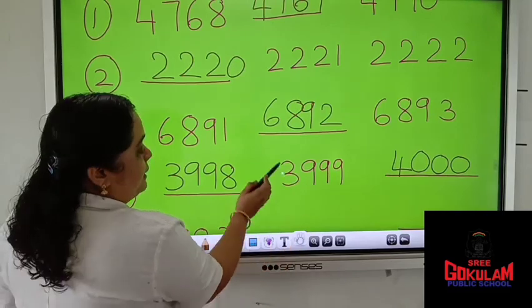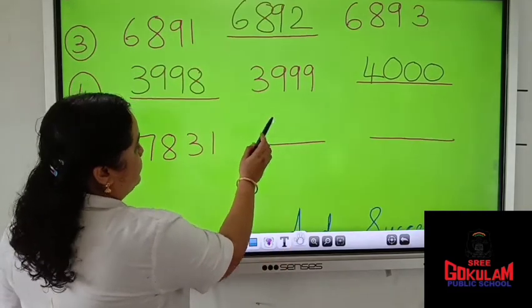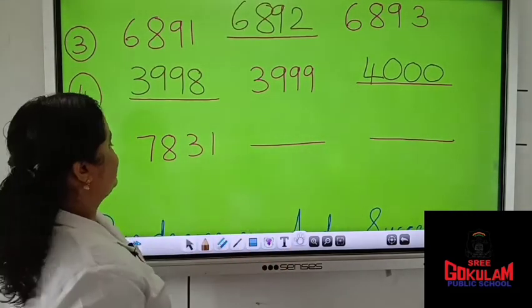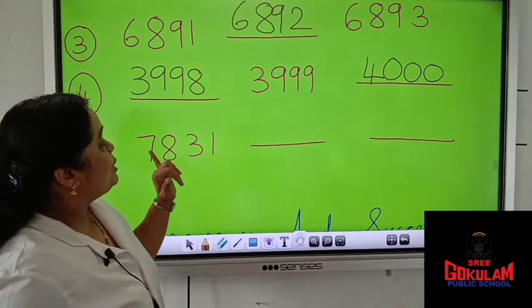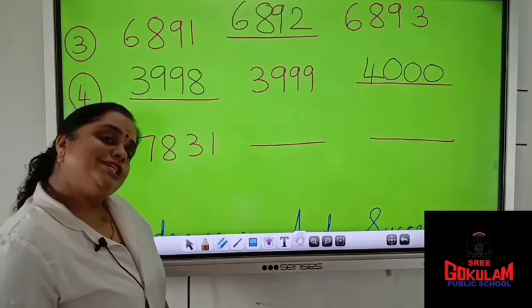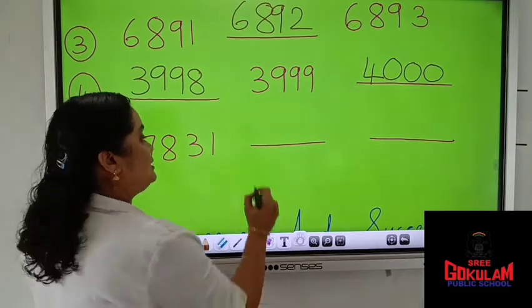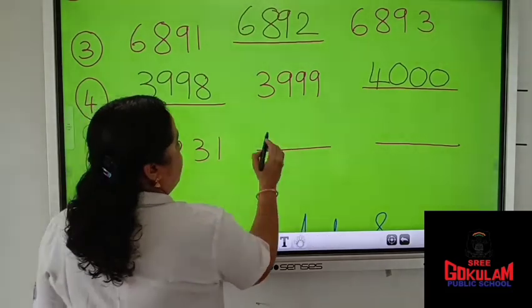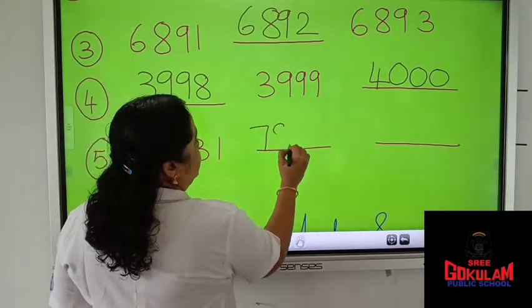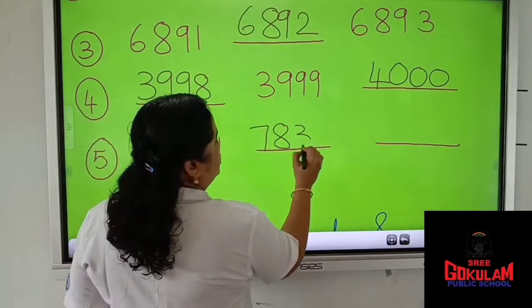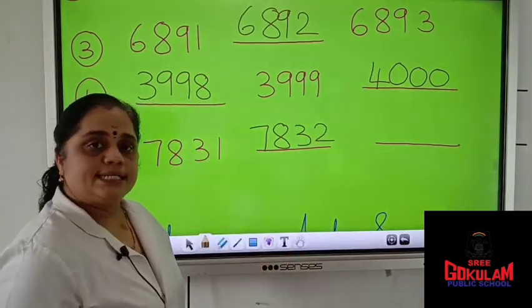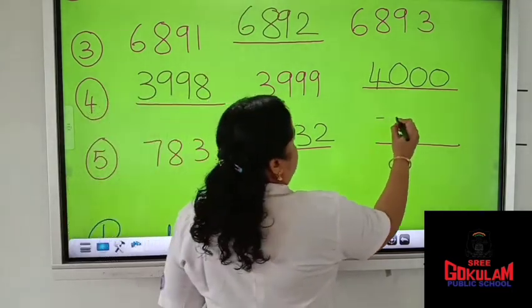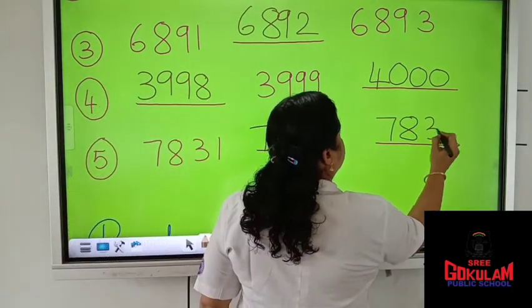Now the last sum for this exercise: 7,831 — which number will come after that? 7,832. And after 7,832? 7,833.